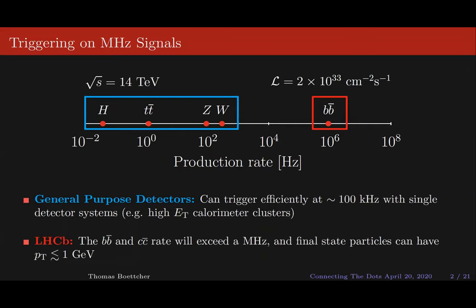One of the first things you want to know when you're designing a trigger is what are the rates of the processes you're interested in studying? If you're working at a general purpose detector like Atlas or CMS, you might be interested in something like Higgs production, TT-bar production, or electroweak bosons. These processes will have a trigger rate that maxes out at roughly hundreds of Hertz, so you can trigger on these efficiently with a trigger that takes about 100 kilohertz using a single detector system — for example, high ET calorimeter clusters for high energy photons or jets.